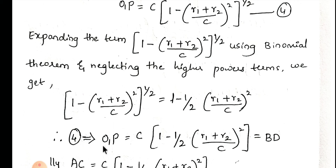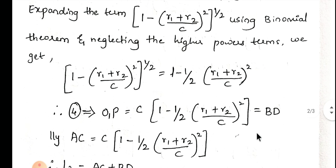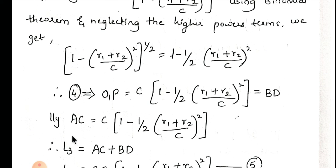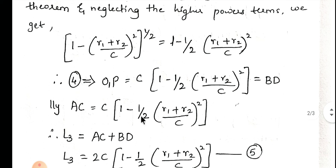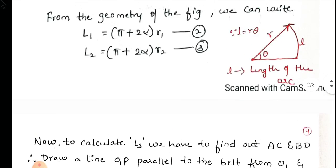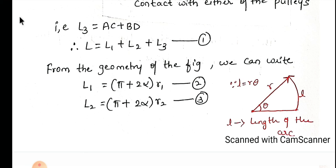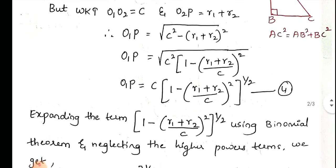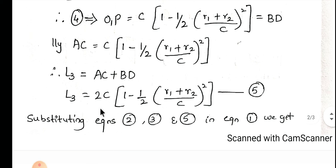From the figure, O1P equals BD. Similarly, AC equals the same value. Therefore L3 = AC + BD, which is 2 times that expression: L3 = 2C × [1 − (1/2)×((r1+r2)/C)²]. This is equation 5. We now have L1 from equation 2, L2 from equation 3, and L3 from equation 5.